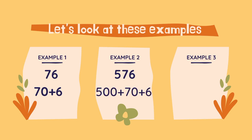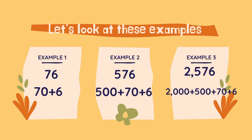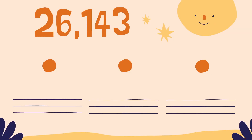500 plus 70 plus 6 — it's just the value of each of the digits. Example 3: 2,576. How about that one? It's 2,000 plus 500 plus 70 plus 6. And now it's time for an even bigger number.